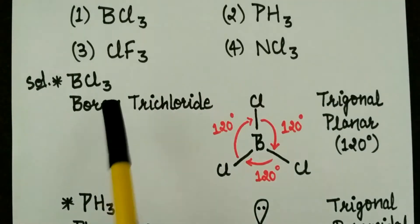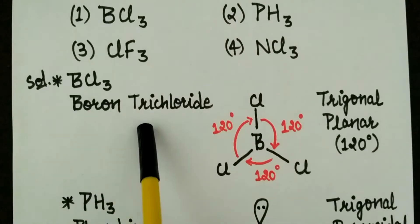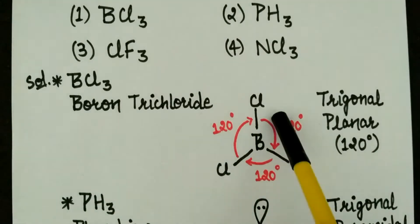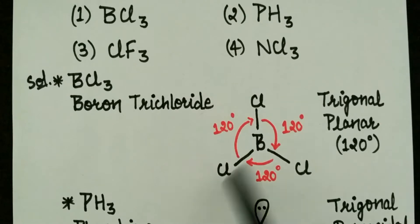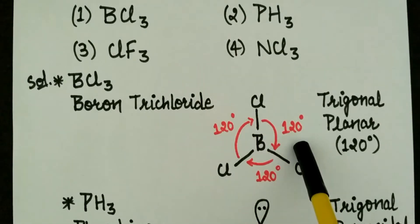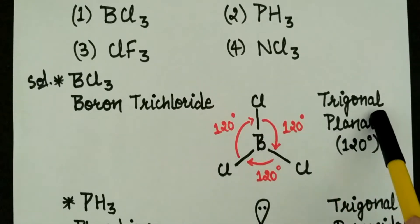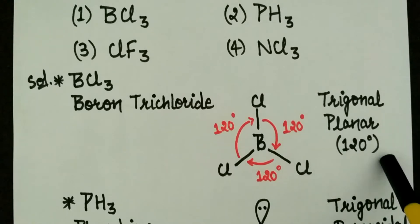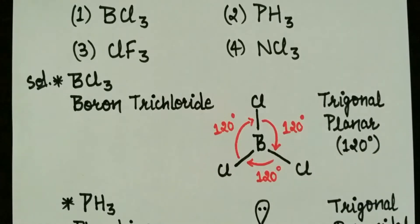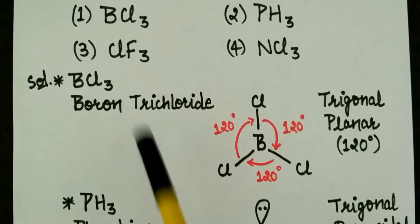Firstly, if we explain BCL3, its name is boron trichloride. And this is its structure. Here we have 120 degrees of angle, and its structure is trigonal planar. So our right option is BCL3.